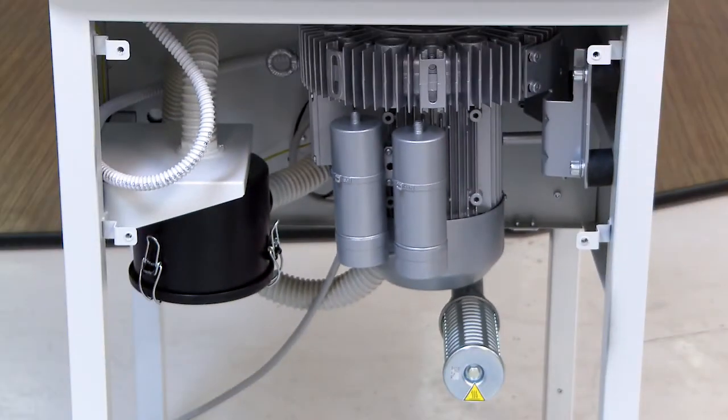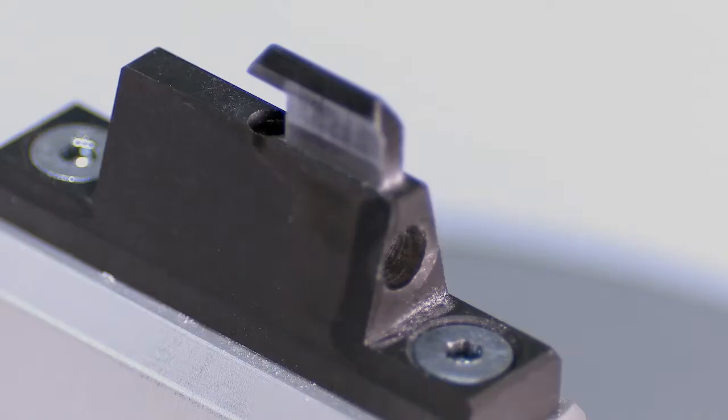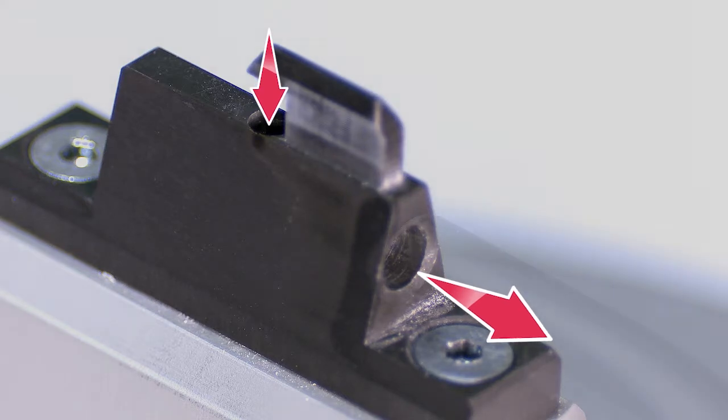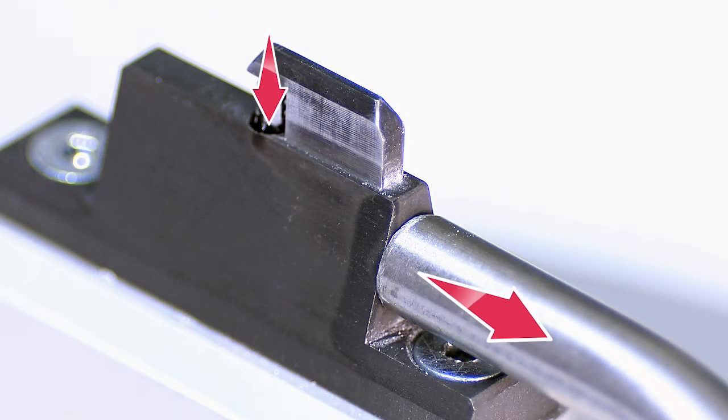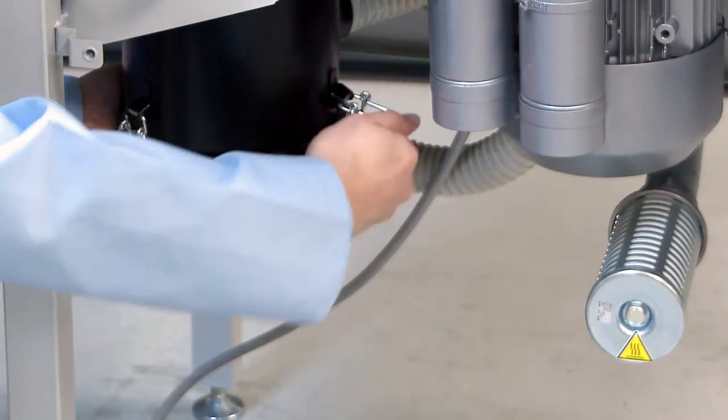A vacuum pump is mounted directly under the tabletop. Its powerful suction removes the fine dust particles directly at the source which is then collected by a filter system that is easy to access and clean.